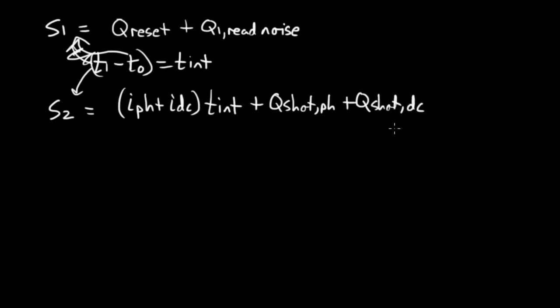There's going to be shot noise associated with the photocurrent plus shot noise associated with the dark current. I want to note that this in total would be our three electrons from the previous discussion. This would be the shot noise would be the square root of the two electrons. And this would be the square root of the one electron.